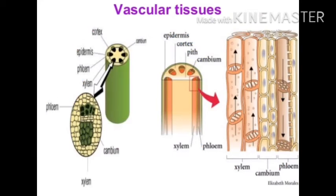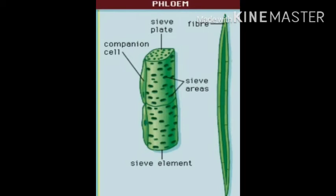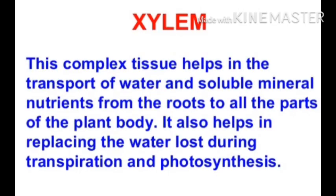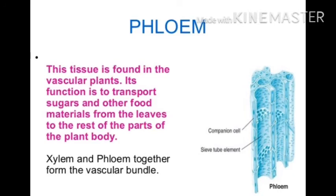Now these are the vascular tissues — xylem and phloem. Everyone can draw these pictures in their classwork notebook and label them properly. This is the xylem tissue — this is a clear picture. This is the phloem tissue. So everyone can draw this in their classwork notebook, or draw the one given in the book. But these pictures are very clear so you can draw these also. This complex tissue helps in the transport of water and soluble mineral nutrients from the root to all parts of the plant body.